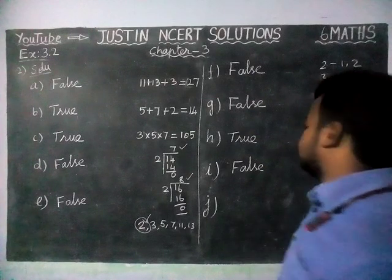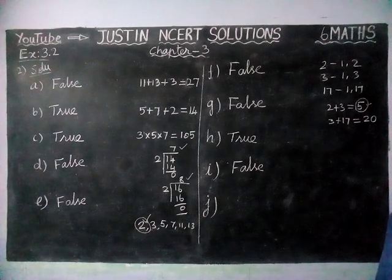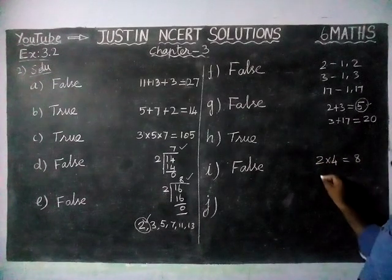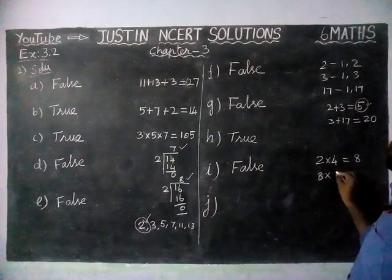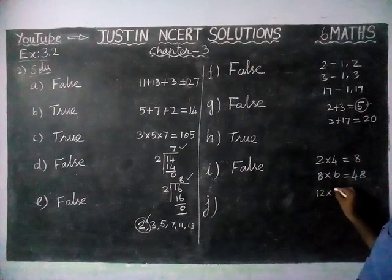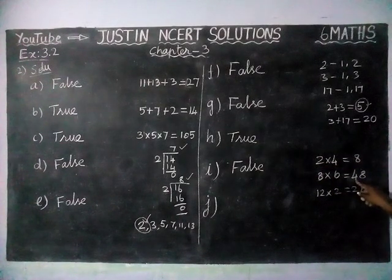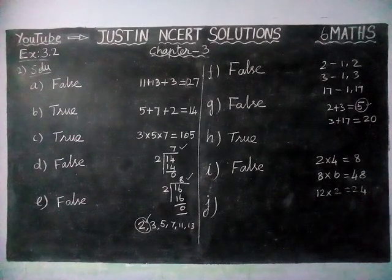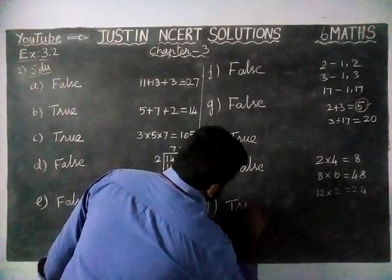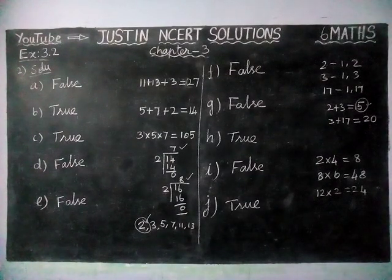Option J: the product of 2 even numbers is always even. We check: 2 times 4 is 8 — even; 8 times 6 is 48 — even; 12 times 2 is 24 — even. When we multiply 2 even numbers, we always get an even number as the answer, so this statement is true. That's all students — kindly give your suggestions in the comments box, share it with your friends and subscribe to our channel. Thank you.